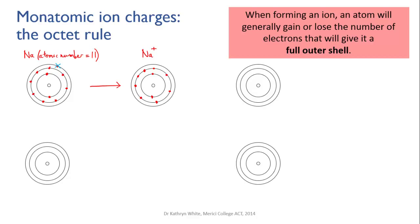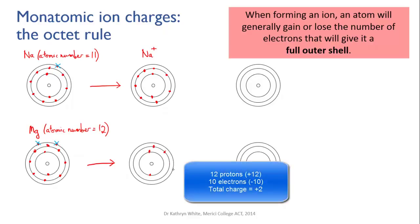Now look at magnesium. It's in group two, so it has two valence electrons. That means it can either gain six to get a full eight, or it can lose two. Losing two is less complicated, so it does that. That means it now has two more protons than electrons, and that gives it a charge of plus two, and we write that as Mg2+.